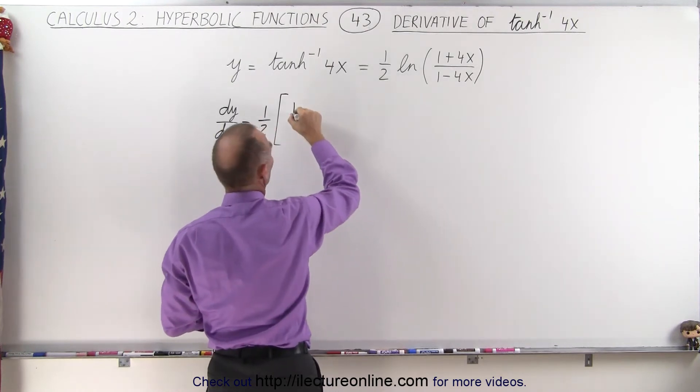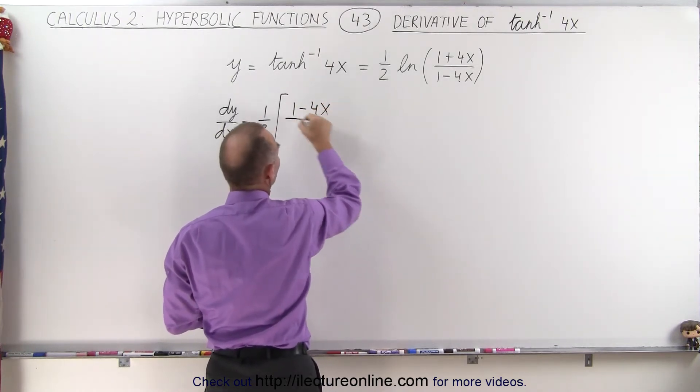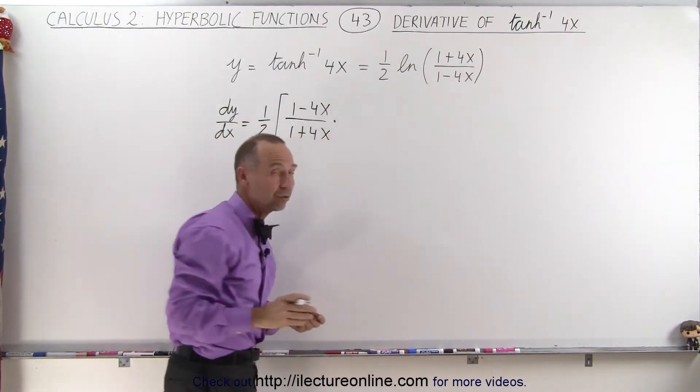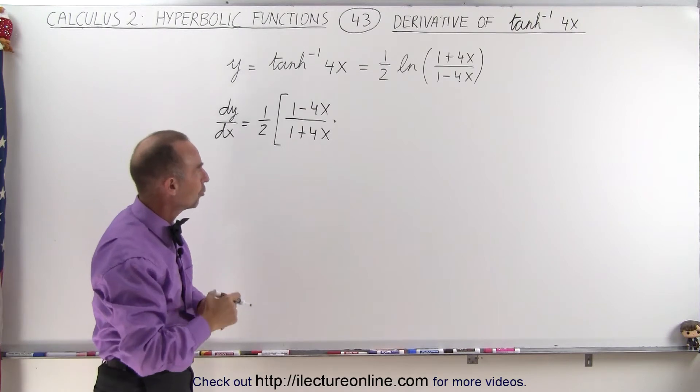or simply flip that over. So we get 1 minus 4x divided by 1 plus 4x times the derivative of what's inside there, which of course is a quotient. We're going to use the quotient rule.